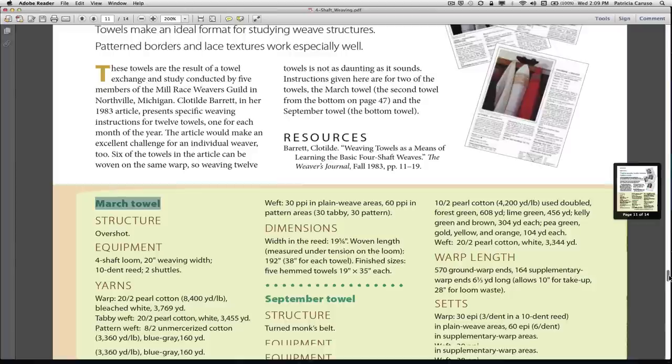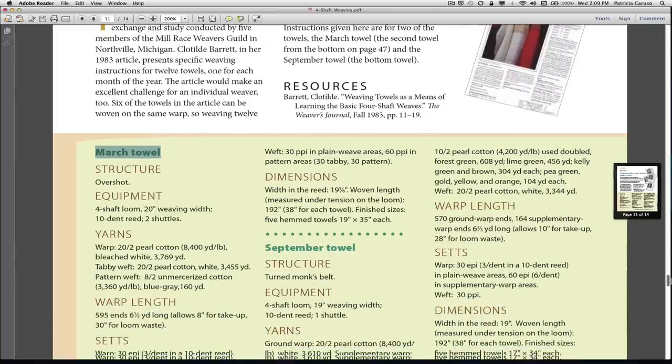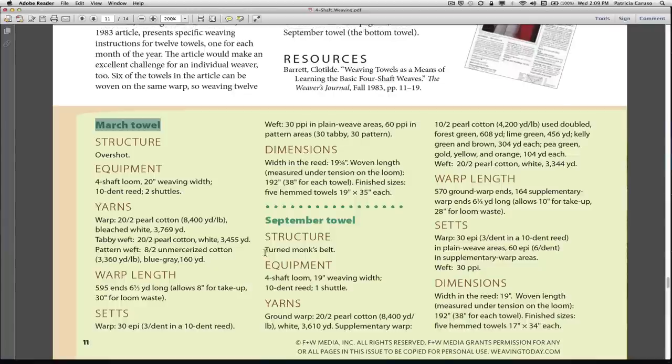The equipment needed for this is a four-shaft loom with a 20 inch weaving width. Now here's the problem right off the bat for me. I have several looms, but the one I plan on using for this project only has a 19 inch weaving width. It's the Wolf Pup. So right off the bat I know I'm going to have to alter something because I don't have that wide of a weaving width. I do have a 10 dent reed, and I do have two shuttles, so I'm good there.